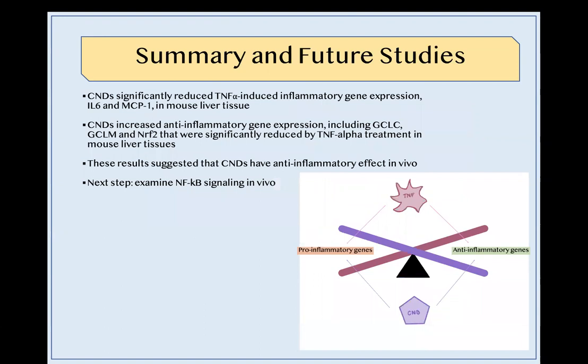So what do these findings tell us? The CNDs significantly reduced TNF-alpha-induced inflammatory gene expression of IL-6 and MCP1, and CNDs also increased anti-inflammatory gene expression, especially the genes that were significantly reduced by TNF-alpha treatment: GCLC, GCLM, and NRF2. These results shown in the image on the right demonstrate that TNF-alpha decreases anti-inflammatory gene expression and increases pro-inflammatory gene expression, while CNDs combat this by increasing anti-inflammatory gene expression and decreasing pro-inflammatory gene expression.